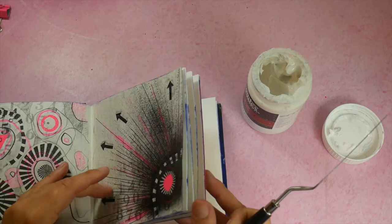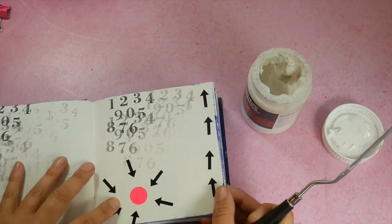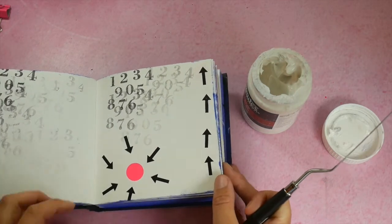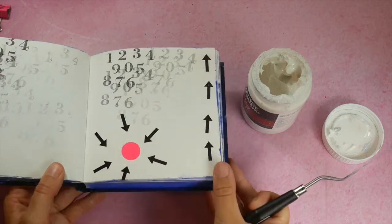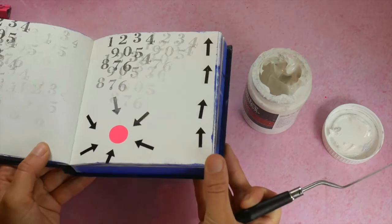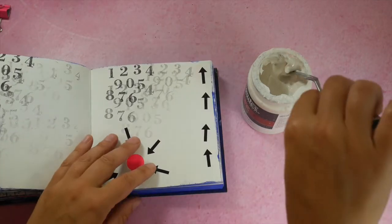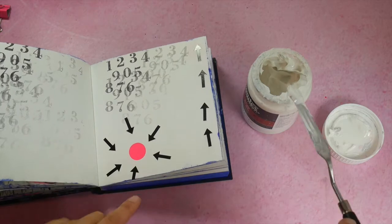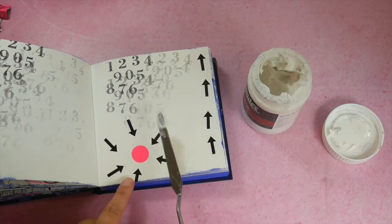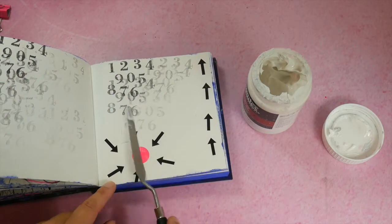I also often use gel medium when I for example use stickers like these. I don't like that they are a bit thicker and I don't like that the stickers are glossy. So what I would do to seal those stickers is apply a very thin layer of the gel medium.